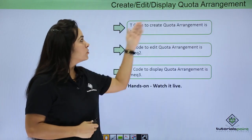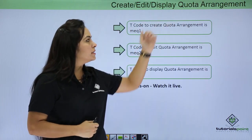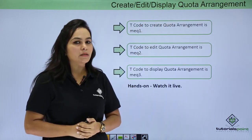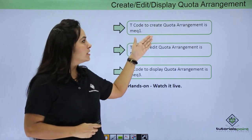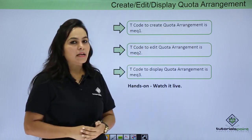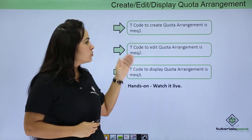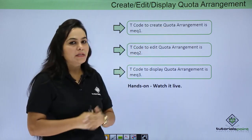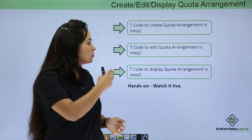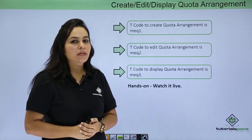Next is how to create, edit and display quota arrangement. To create quota arrangement, the transaction code is MEQ1. To edit it is MEQ2, and to display it is MEQ3.